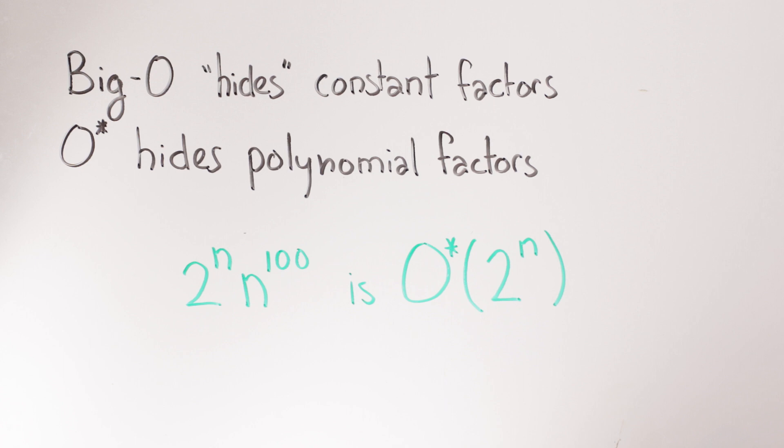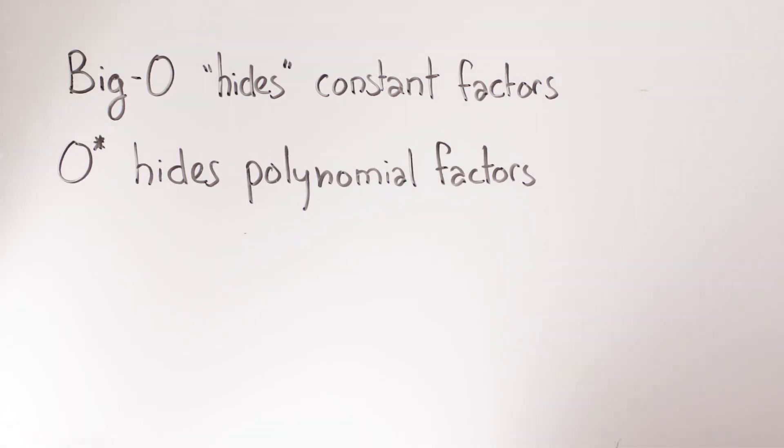For a large enough n, any difference in the base will exceed any polynomial factors. This works pretty well for exponential runtimes, where we know specifically that it's the polynomial factors we don't care about. But then there is O tilde.